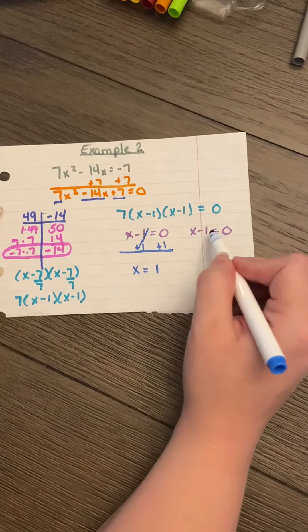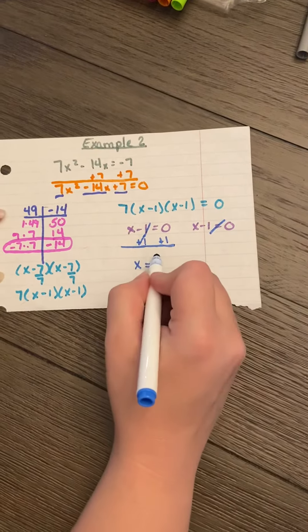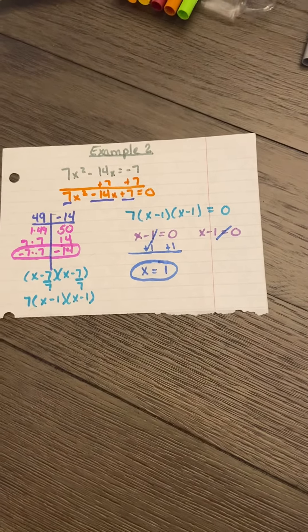And you'll notice this is exactly the same, so we don't have to do it again. In this case, there's only going to be one answer, so x = 1.